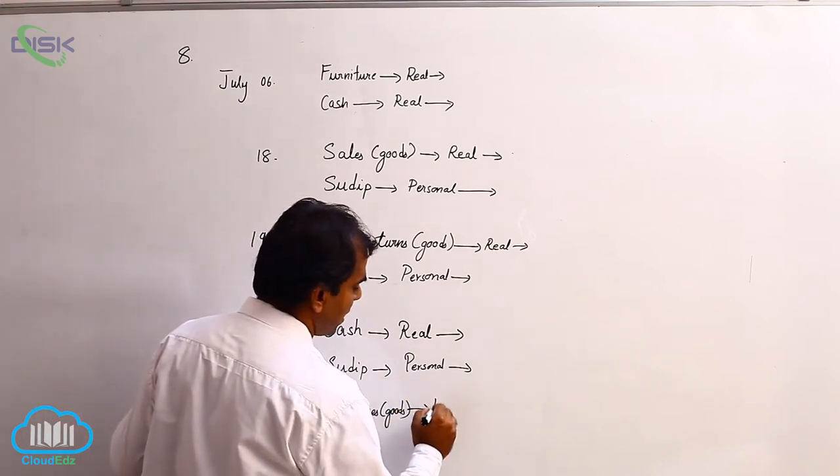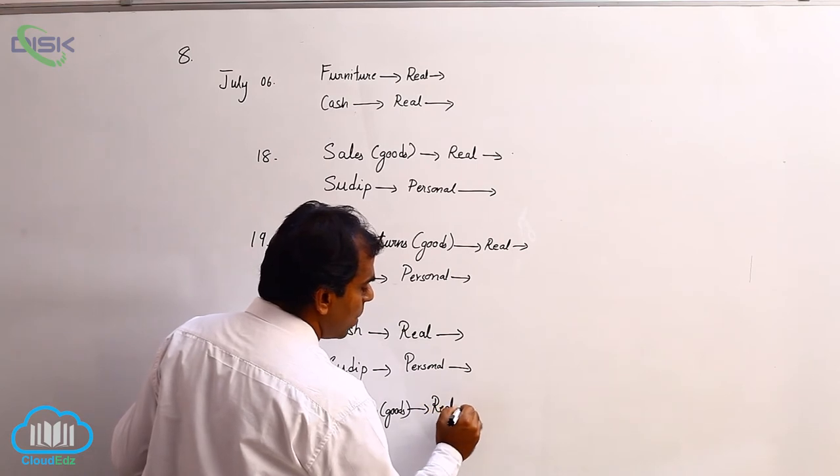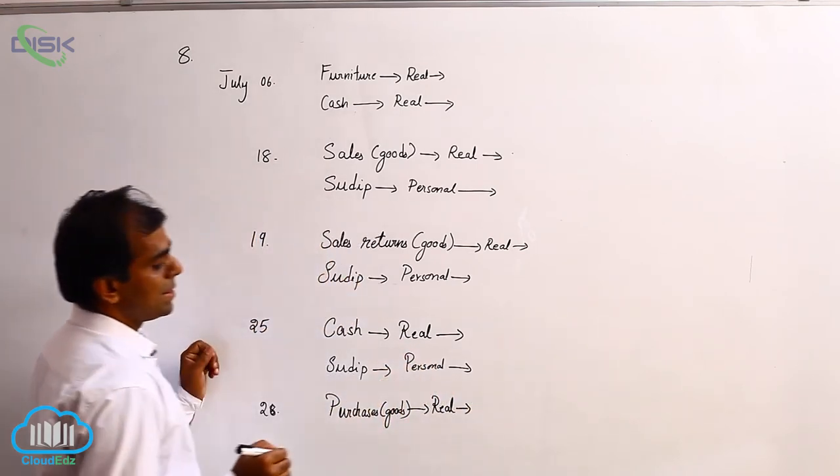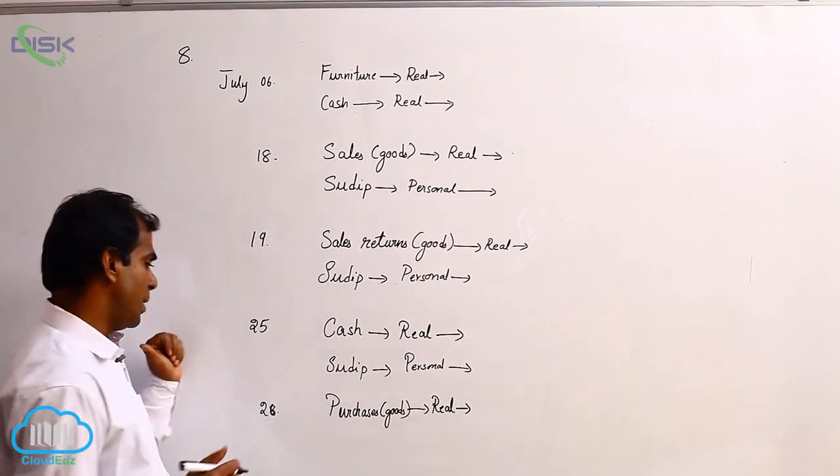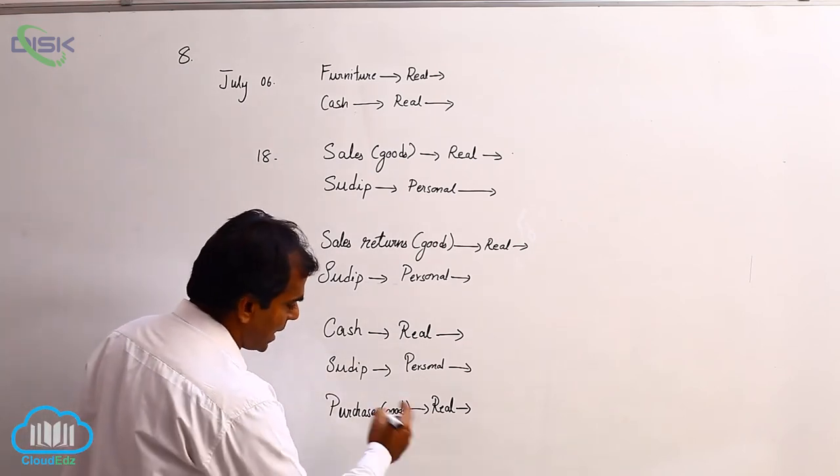So goods being real account. So when the owner is taking home, check whether these goods are coming in or going out. Next, who is taking home?